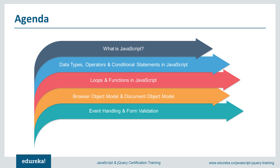Hi guys, welcome to this interesting session on JavaScript. We're going to start by understanding what JavaScript is and the different data types in JavaScript. Once you understand data types, we'll go through operators, conditional statements, and loops. After the basic concepts, we'll look into functions in JavaScript and finally end the session with event handling and objects, including the browser object model, DOM, and form validation. Today we have a special guest, Gauri, who's going to take this session forward.